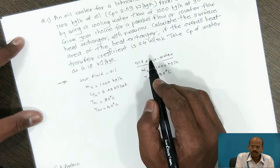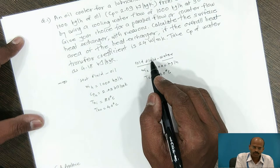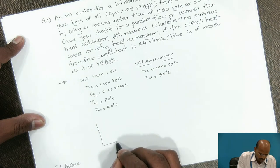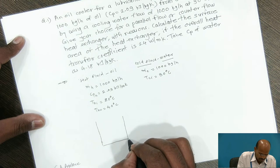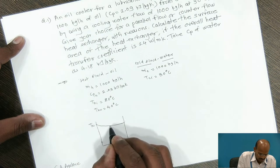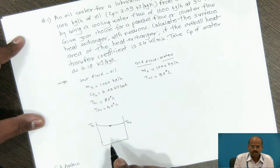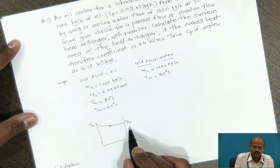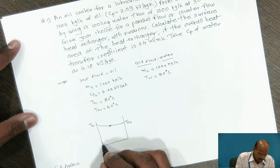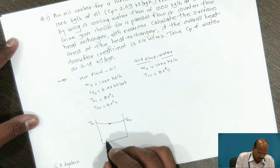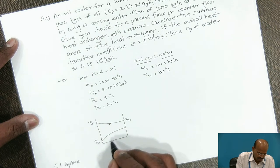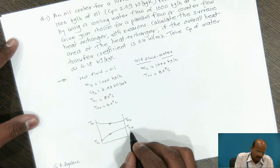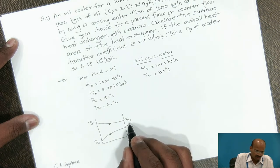They ask us to find the type of heat exchanger — parallel flow or counter flow. For the parallel flow heat exchanger, the temperature profile has a characteristic shape in which T_HI is the hot fluid inlet temperature and T_HO is the hot fluid outlet temperature. In parallel flow, the cold fluid flows in the same direction, gains heat, and leaves at T_CO. Remember, the temperature of cold fluid is always less than the hot fluid.